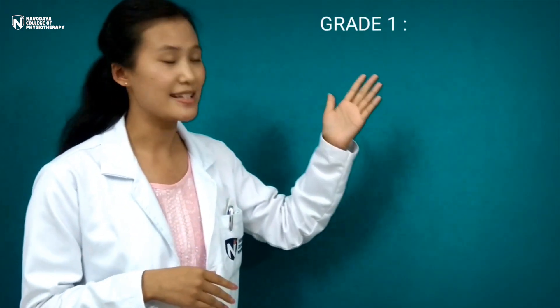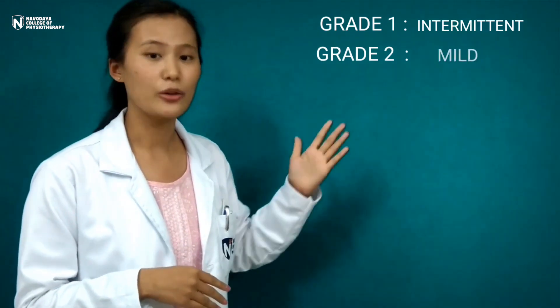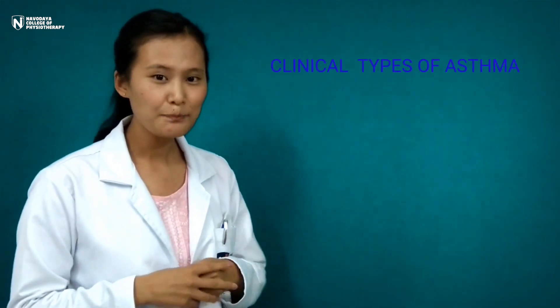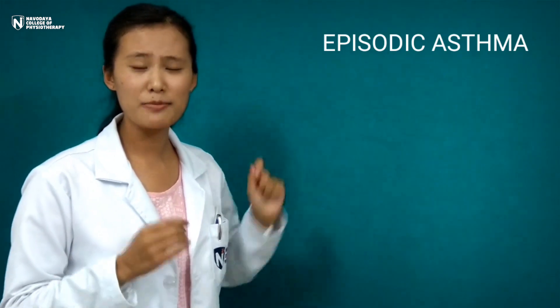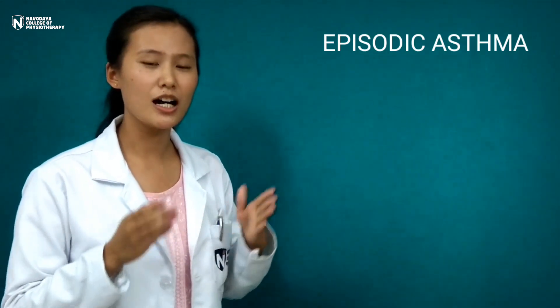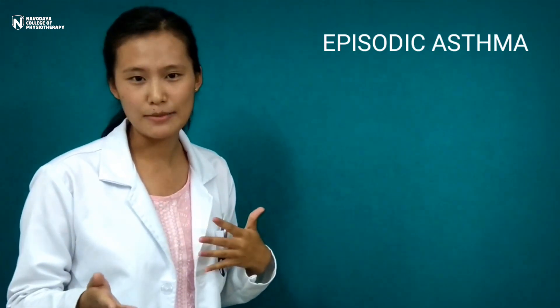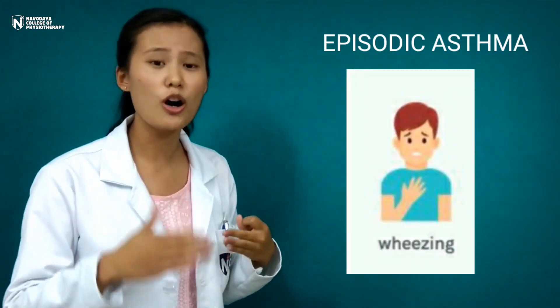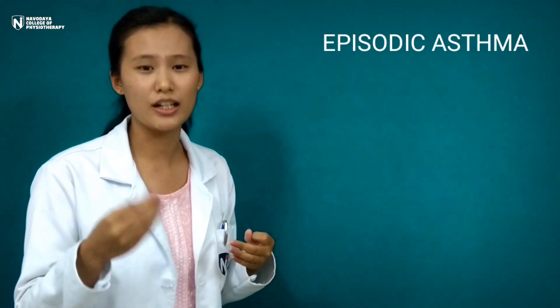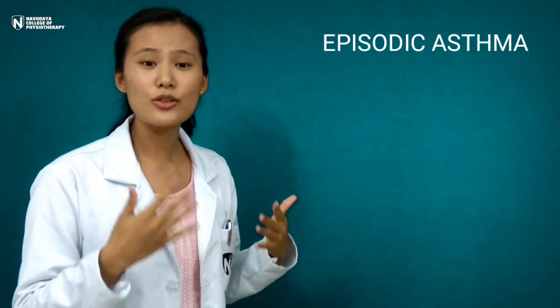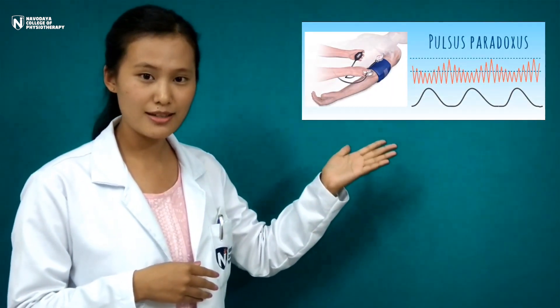Based on degree of severity, asthma is classified as grade 1 (intermittent), grade 2 (mild), grade 3 (moderate), and grade 4 (severe). Episodic asthma occurs in episodes with a symptom-free period alternating with a symptom period. It can occur at any time with chest tightness, breathlessness, and expiratory wheezing audible without a stethoscope. There will also be a troublesome cough with scanty viscid mucus. Severe episodes may present with tachycardia, pulsus paradoxus and central cyanosis.